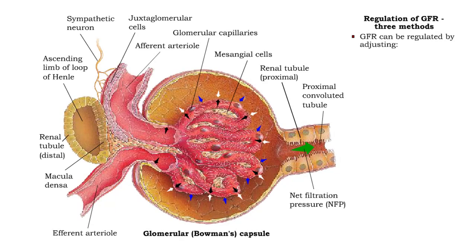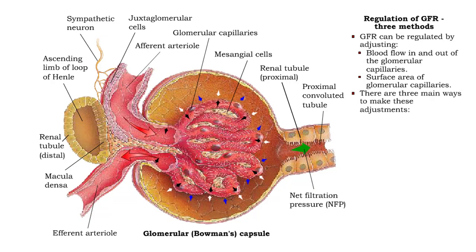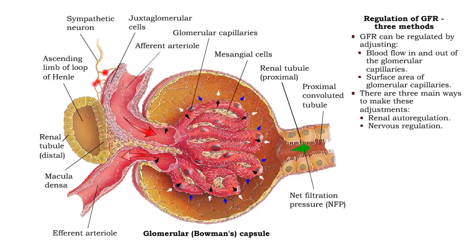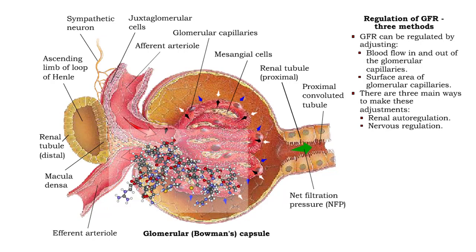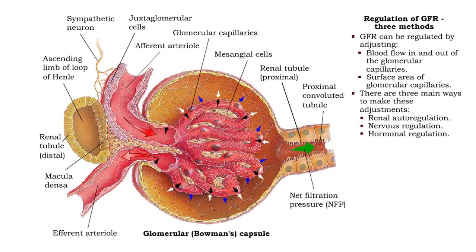Glomerular filtration rate can be regulated by adjusting both the blood flow in and out of the glomerular capillaries and the surface area of the glomerular capillaries. There are three main ways to make these adjustments: renal autoregulation, nervous regulation, and hormonal regulation.